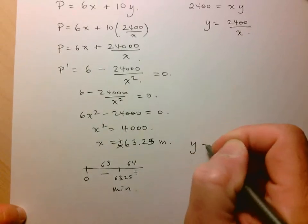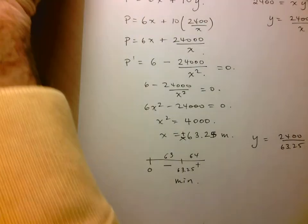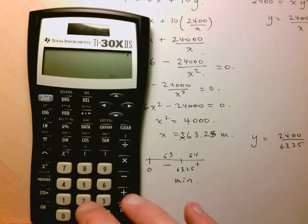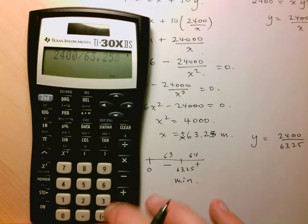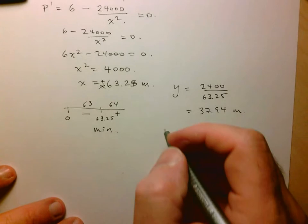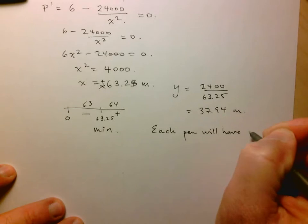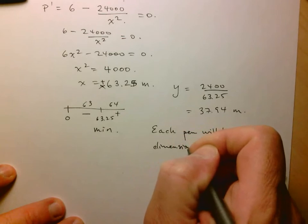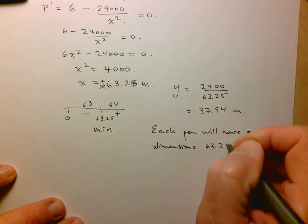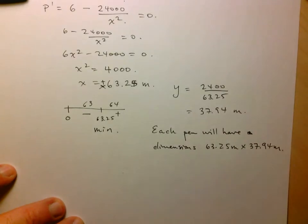And so here, now we can calculate Y. So 2,400 divided by 63.25, and that's 37.94. So we can say here, each pen will have dimensions 63.25 meters by 37.94 meters. And that's it.